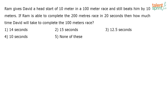Ram gives David a head start of 10 meters in a 100 meter race and still beats him by 10 meters. If Ram is able to complete the 200 meters race in 20 seconds, how much time will David take to complete the 100 meters race?